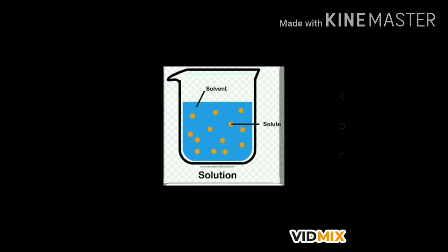A component present in large amount is called the solvent, while the component present in lesser amount is called the solute. Thus, a solute is a substance which dissolves, and the solvent is the substance in which dissolution takes place. For example, if a crystal of sugar is dropped into a beaker of water it dissolves to form a solution.